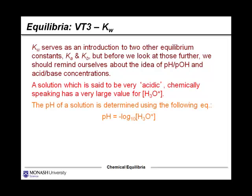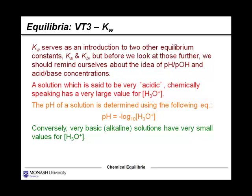We often talk about how acidic something is by quoting the pH of the solution. The pH of a solution is determined using the equation: pH = -log10[H3O+].